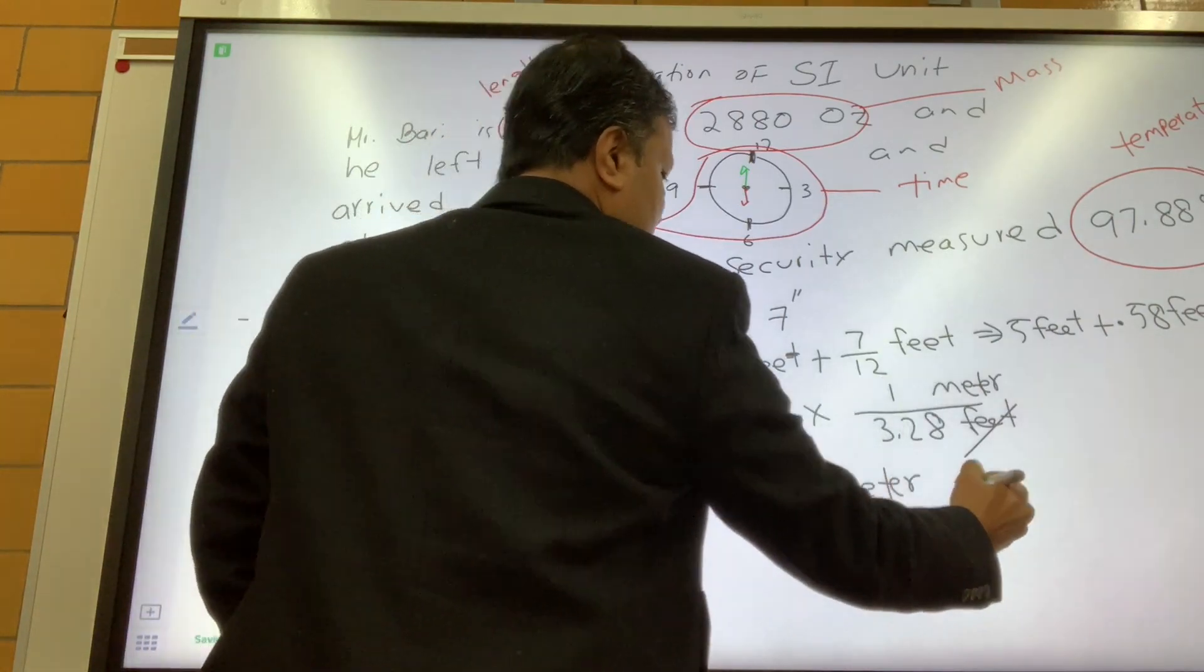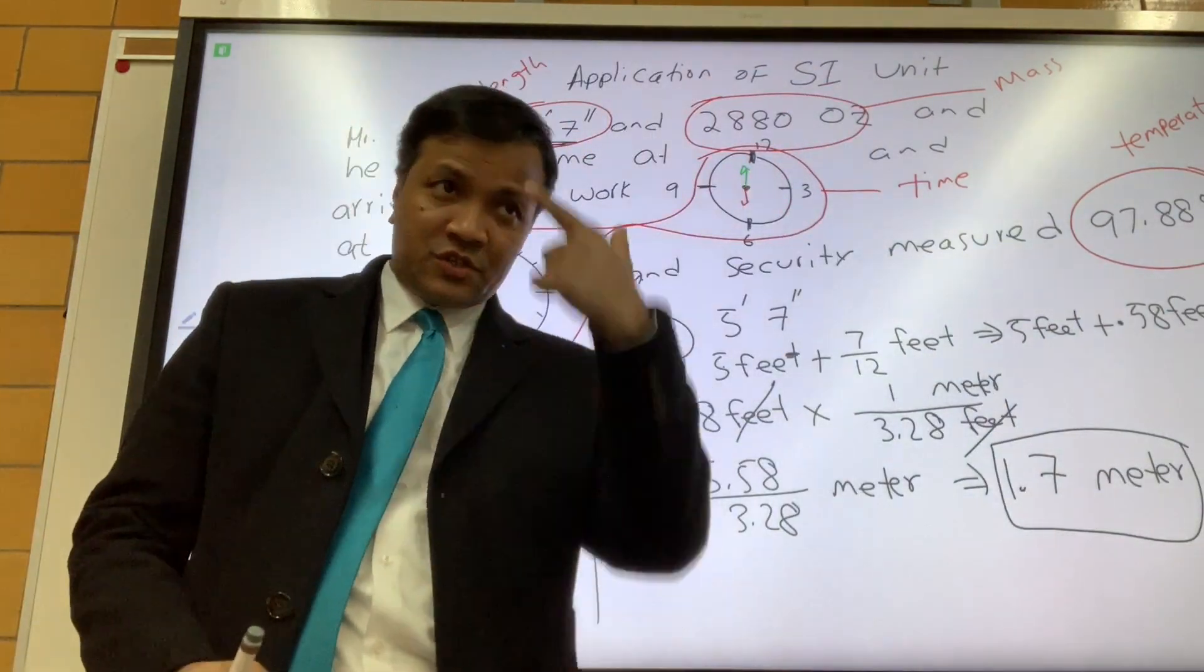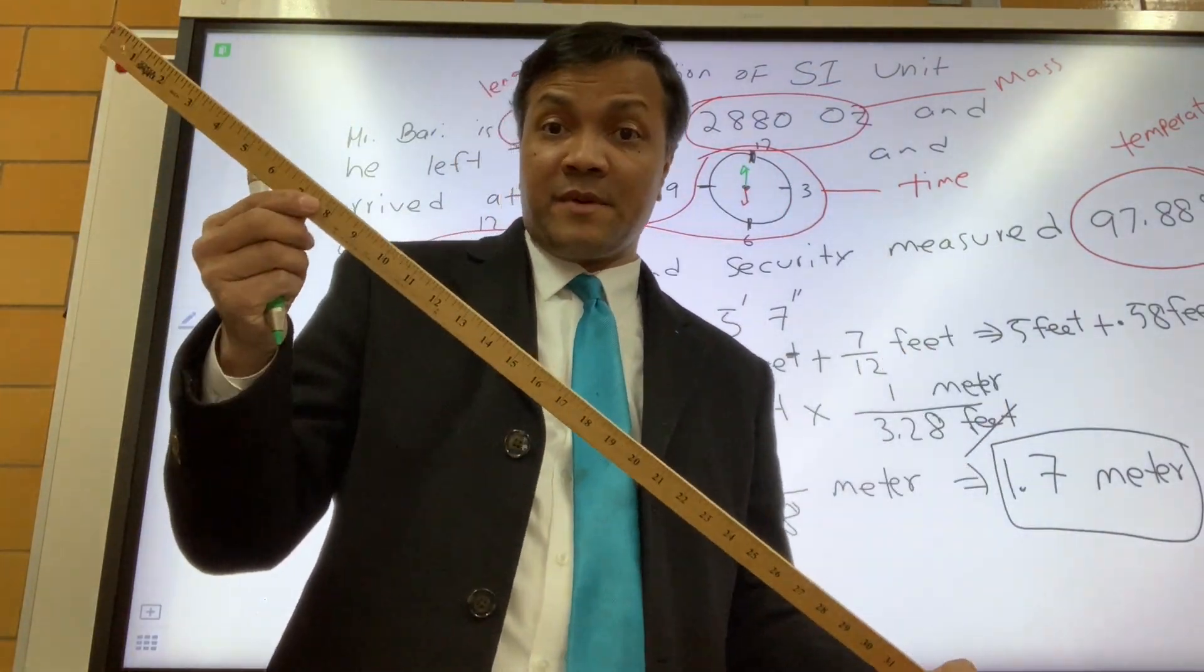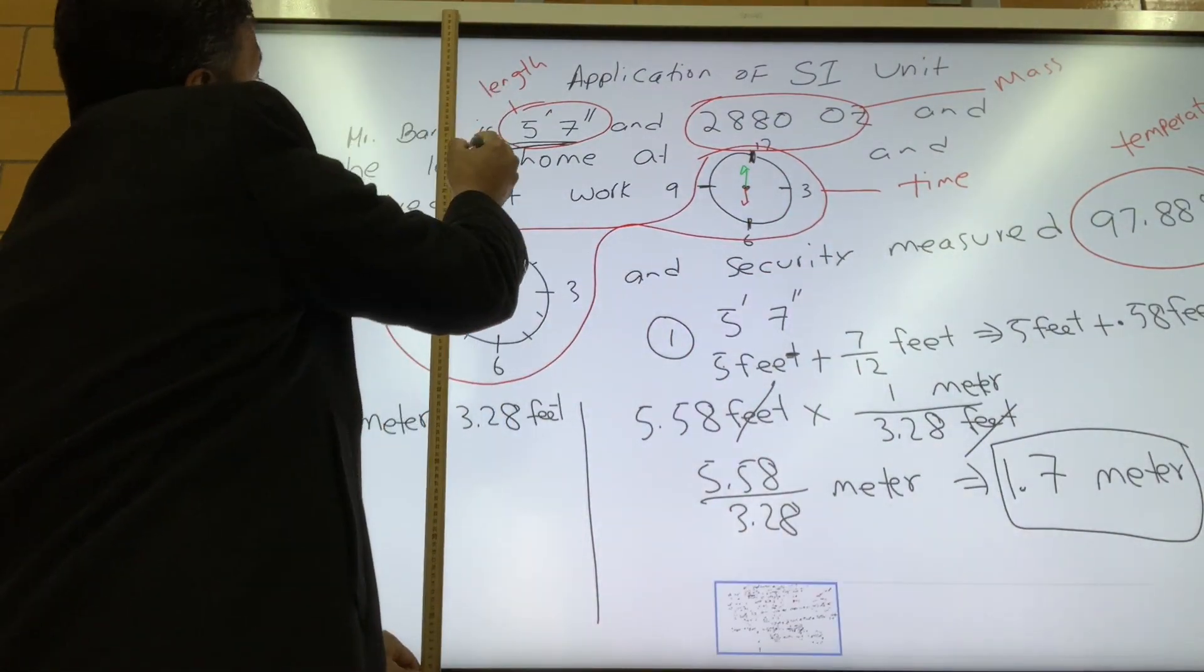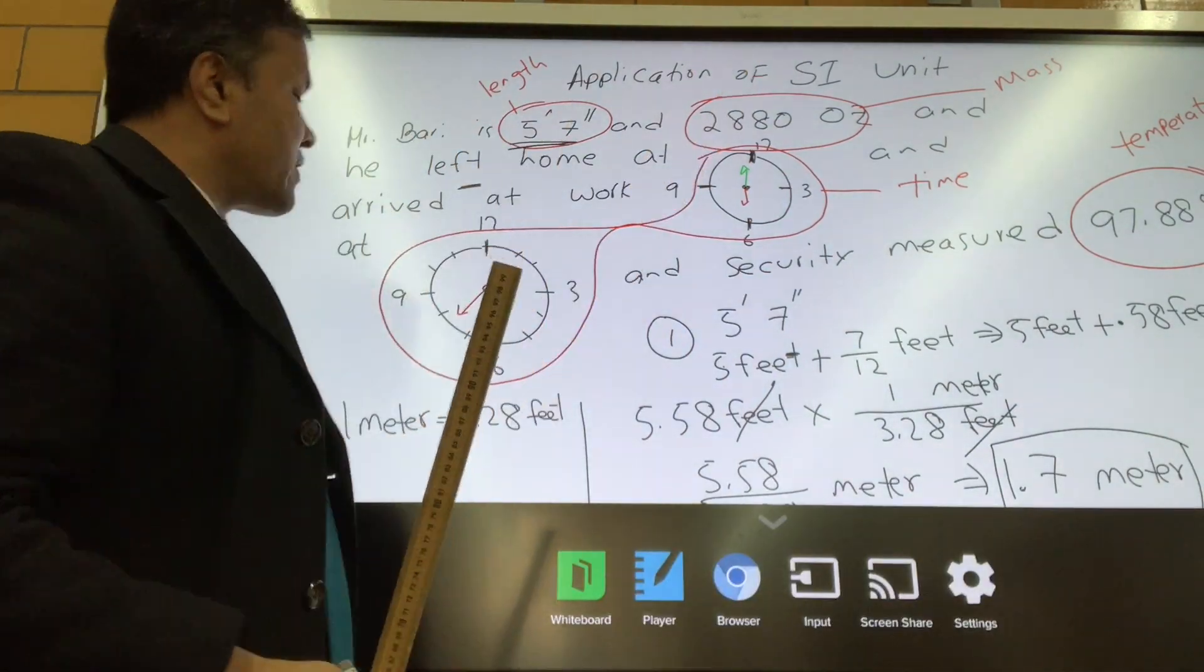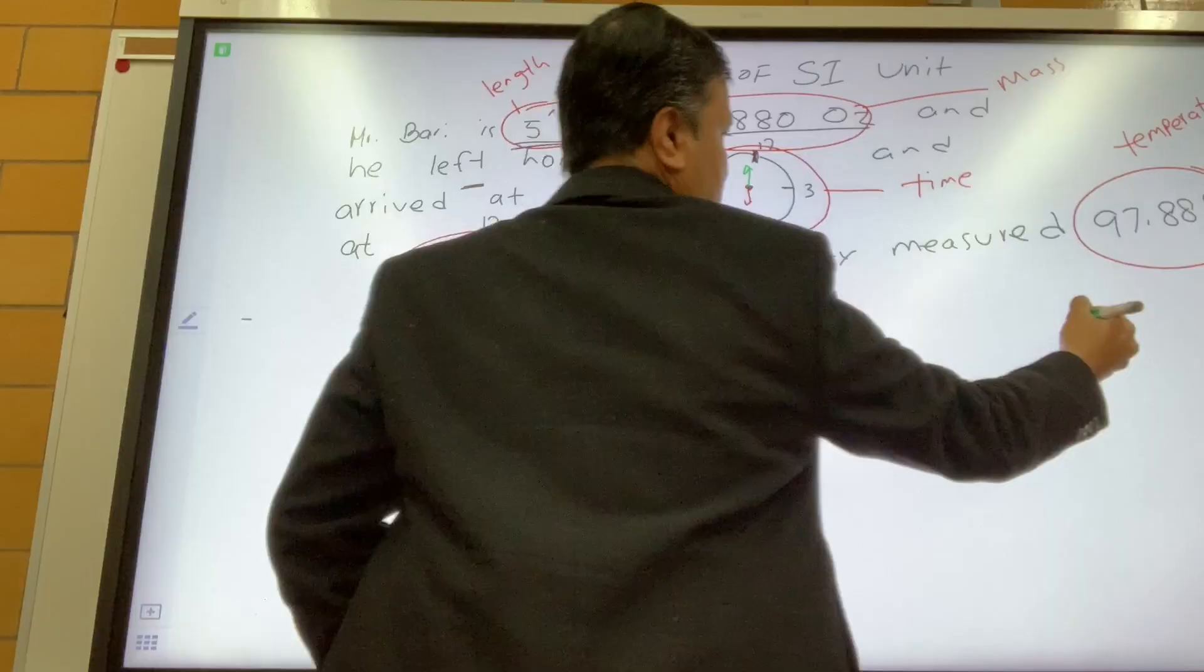So now feet would cancel. 5.58 divided by 3.28, so it's going to be 1.7 meters. So Mr. Berry is 1.7 meters. This is the meter stick. If I measure my height by meter stick, I should be 170 centimeter. Let's see, yeah, I'm very close to 170 centimeter because I have shoes on. I have to remove the shoes to get the accurate measurement.